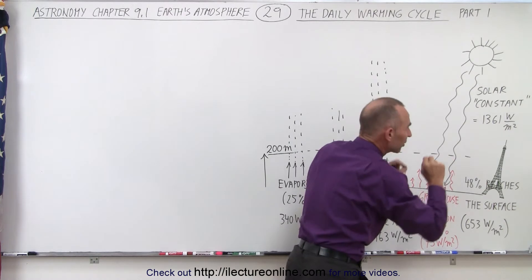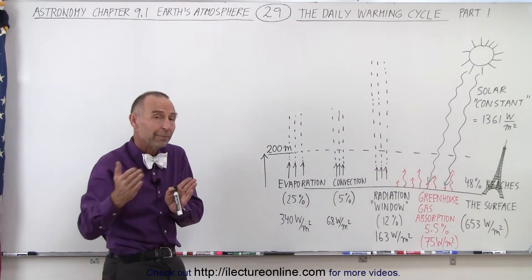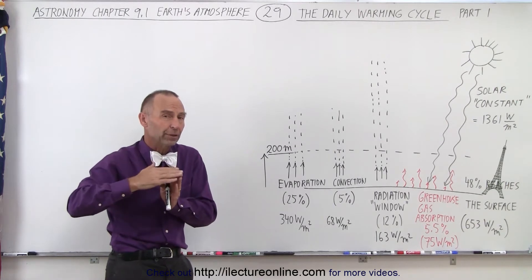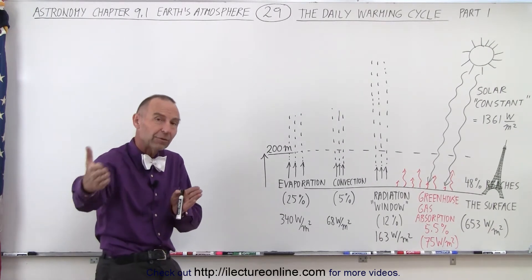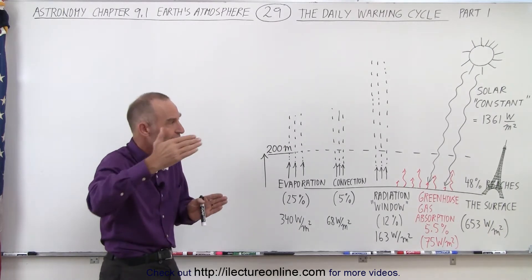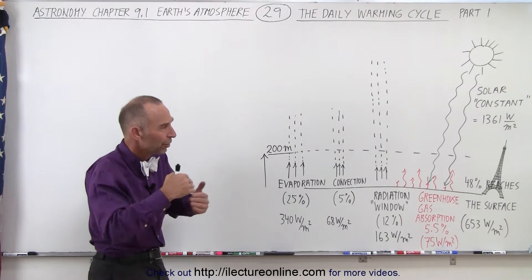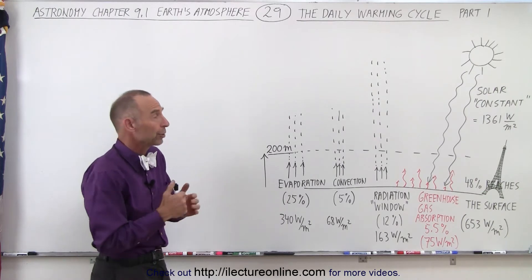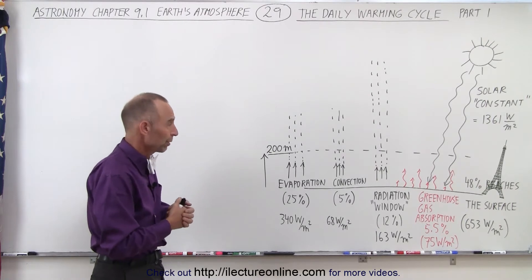The reason why we have constant in quotation marks is because it's not actually a constant. It varies quite a bit depending upon where the Earth is in its orbit. The Earth's orbit is not a circle, it's an ellipse, and therefore sometimes the Earth is closer to the sun, sometimes it's farther away. So there is a variation of about 100 watts per square meter throughout the year, depending upon where the Earth is. But on average, it's 1,361 watts per square meter.